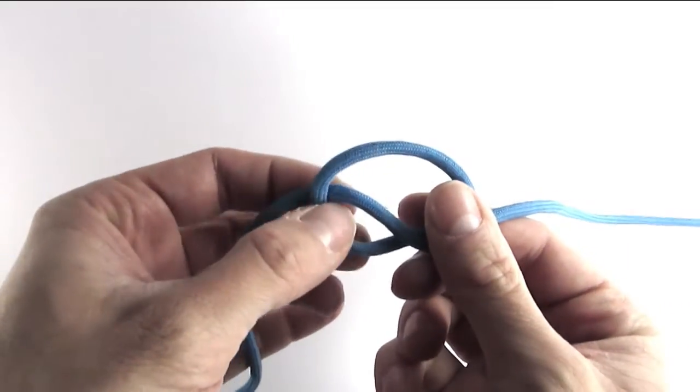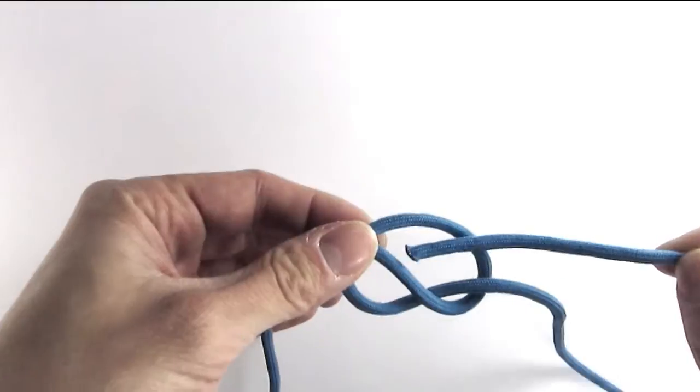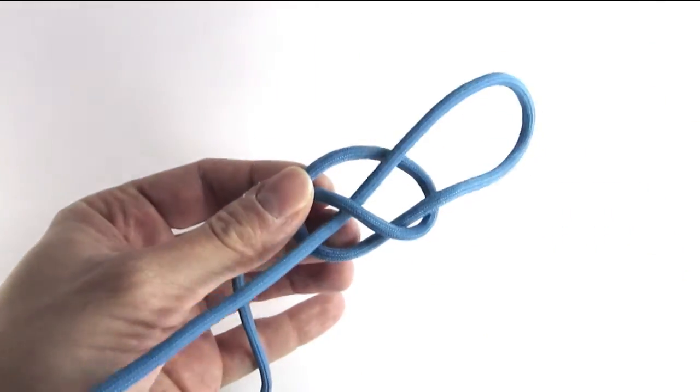We're then going to spread apart the left part of this loop and insert the right cord through this loop.